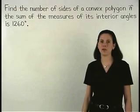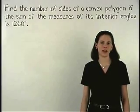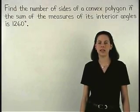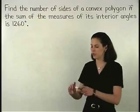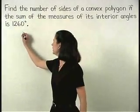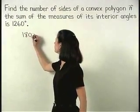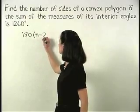Remember that the sum of the measures of the interior angles of a polygon can be represented by the formula 180 times parentheses n minus 2.